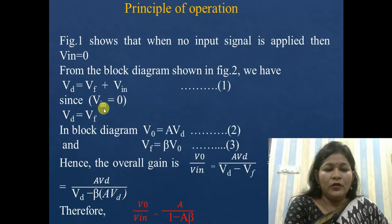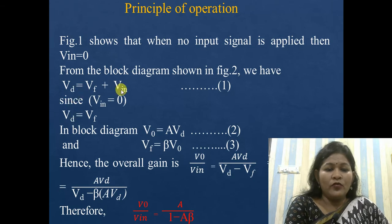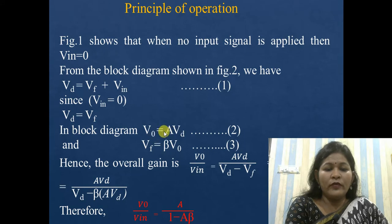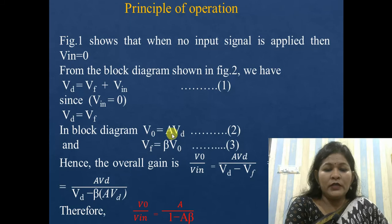Because no input voltage is required in the circuitry, Vin = 0, so Vd equals Vf. From the block diagram, V0 = A × Vd, because the output voltage is always equal to the gain A multiplied by the difference voltage Vd.